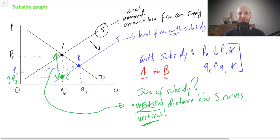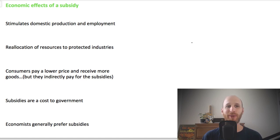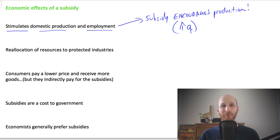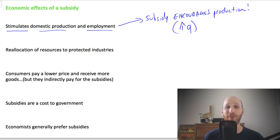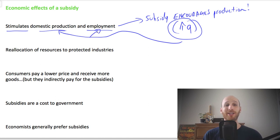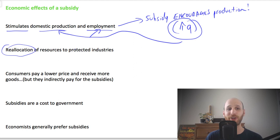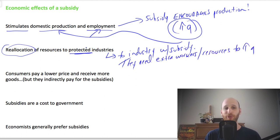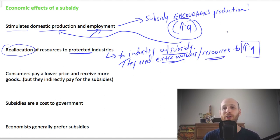Now let's look at the economic effects of a subsidy. First, a subsidy encourages production — when the government gives money to the firm, they can increase quantity, shown by the shift in the supply curve. Because production increases, firms will need more workers. Related to this, we see a reallocation of resources to protected industries, as those resources are needed to deal with the increase in production.